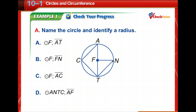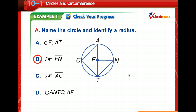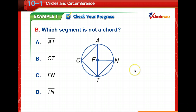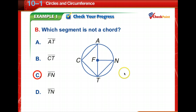Time for you to check your progress. Pause the video, read the problem, and then come back and check that you've got the correct answer. It's pretty easy to name this circle F since F is the center, so we can rule out D. The radius starts from the center to a point on the circle, so FN is its radius. Which segment is not a chord? Segment FN is not a chord — it is a radius.